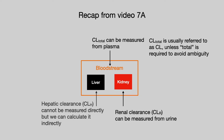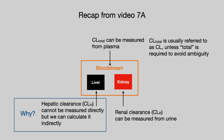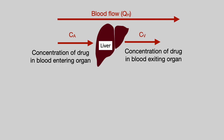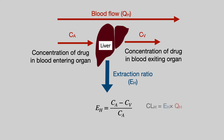Hepatic clearance is a little different because you can't measure it directly — you have to calculate it indirectly. It's explained by the fact that you have a concentration of drug in blood entering an organ — the liver in this case — and a concentration of drug exiting the liver. You have an extraction ratio, which for the liver is known as the hepatic extraction ratio, hence EH. The extraction ratio and hepatic clearance are given by their respective equations, covered in Video 7a.